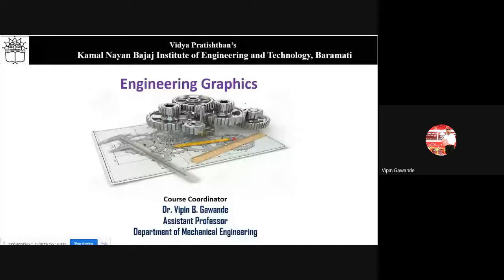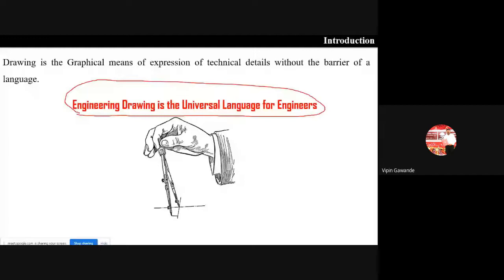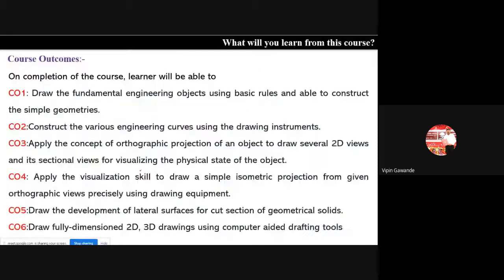Good morning students and welcome to another online lecture for engineering graphics. In the last lecture we discussed the introductory part of engineering graphics - what engineering drawing is. Engineering drawing is the universal language for engineers. Whatever we can't express through text, we can explain with the help of drawings. That's why engineering drawing is called the universal language for engineers.